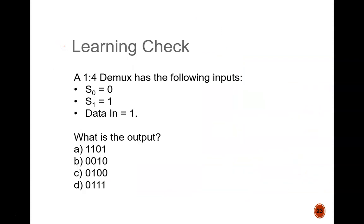Let's have a quick learning check. A 1 to 4 DMUX, same as the previous slide, has inputs of S0 equals 0, S1 equals 1, and D equals 1. What is the output? Pause the video until you write down an answer.